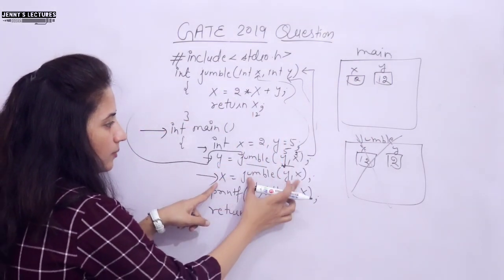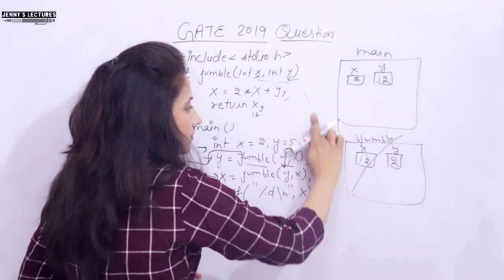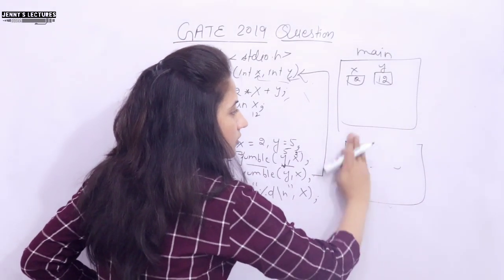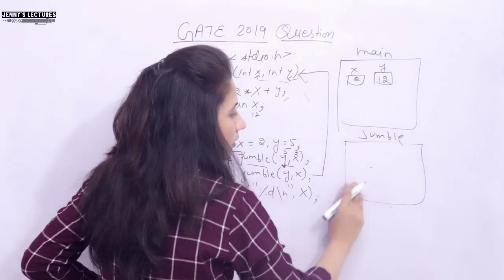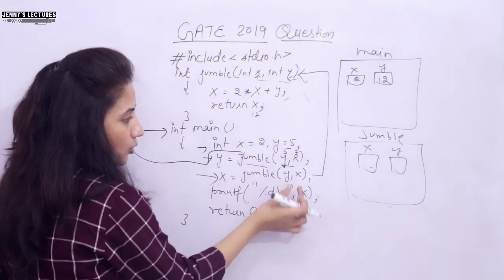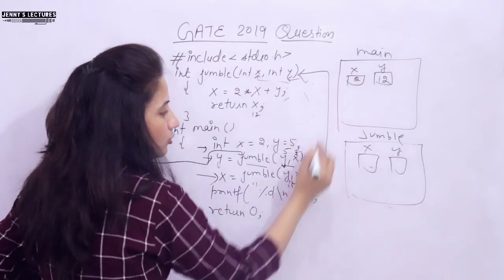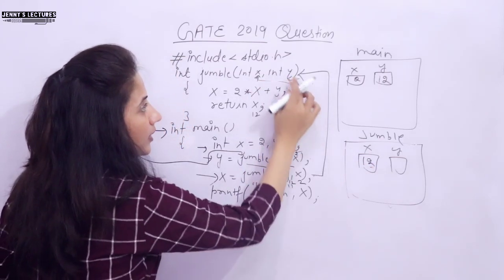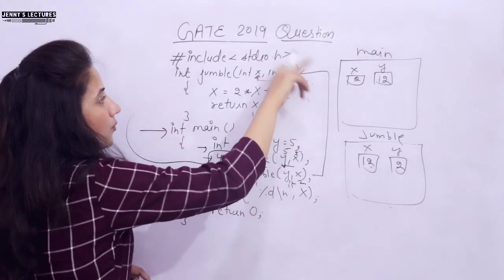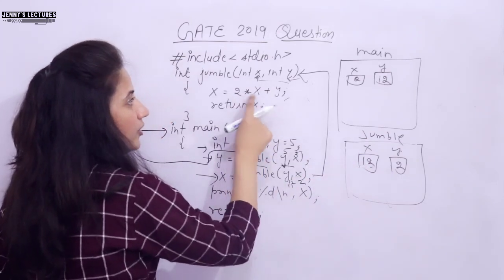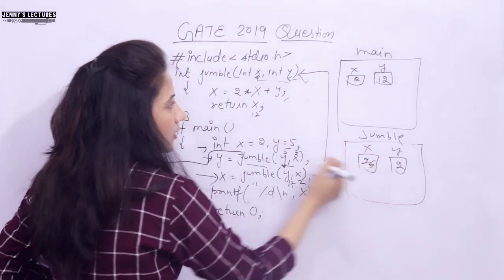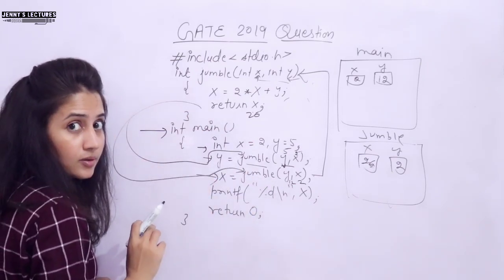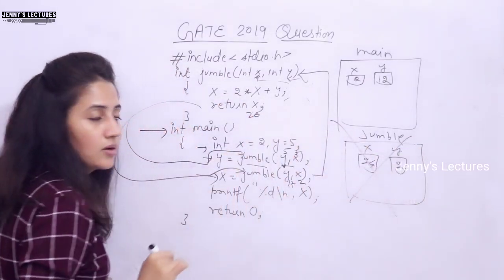Next line, x is equal to jumble this. Again we are calling the function. Again when you will call, control will go here. Again memory would be allocated to this function. Here we have now x and y. We are passing y and x. y value is 12 and x value is 2. So now this 12 would be received by this x. Now in x we have 12 and this 2 would be received by this y. So here we have 2. Now x is equal to 2 into x plus y. So 2 into x means 12 into 2, 24 plus 2, 26. Now in x we have 26. Return x. Now 26 would be returned. Return means now control will go here. We are calling this function here. Now once control will go out of this, this memory has been freed. Now these x and y are no more.